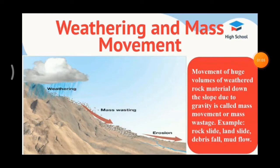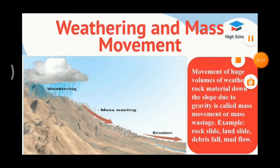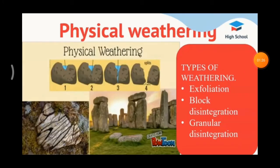Weathering is the breaking, disintegration, and decomposition of materials of the earth's crust. There are three types of weathering: physical weathering, chemical weathering, and biological weathering.